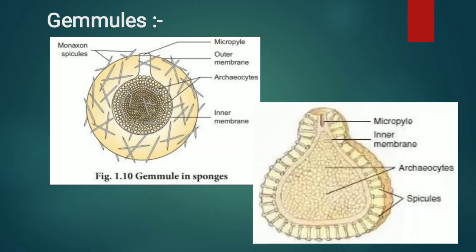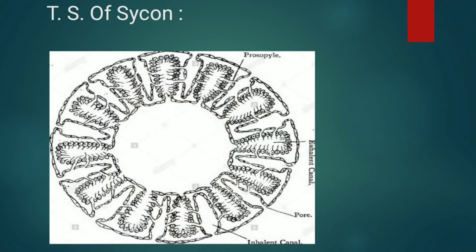Next is the TS of Sycon. In the TS of Sycon, the body wall is diploblastic with an outer dermal layer and inner gastric layer, showing cellular organization. Outer ectoderm, inner endoderm, and intermediate mesenchyme are present. The ectoderm consists of pinacocytes which form the lining of incurrent canals. The gelatinous mesenchyme contains calcareous spicules, amoeboid cells, choanocytes, and archaeocytes.